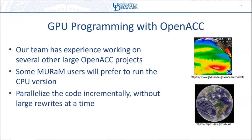The reason we're using OpenACC specifically is that we have a team with different areas of expertise, and several members have very good OpenACC experience from other large projects. One example is MPAS, a weather modeling code used in real-world weather prediction, which is a Fortran code running with OpenACC. Some MURaM users will continue running the CPU version for smaller simulations, so we need to support both CPU and GPU while also supporting future physics additions.